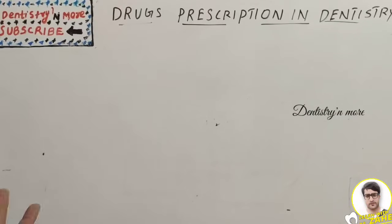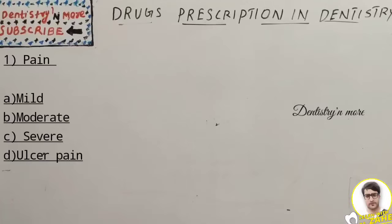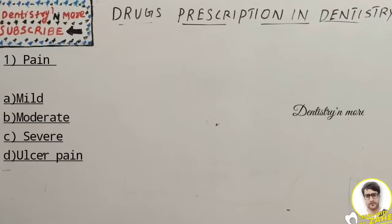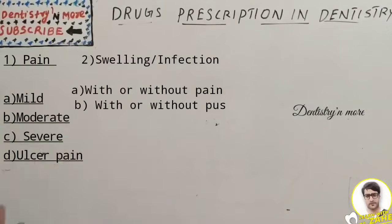The first and foremost chief complaint is pain — slight, moderate, severe, or throbbing pain — as well as pain due to ulcers. Another scenario is swelling and infection. If swelling is present, infection is almost definitely there too, with or without pus discharge. It can be swelling with pus discharge, or pain, swelling, and pus together.